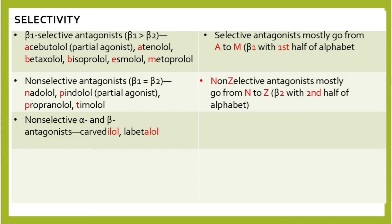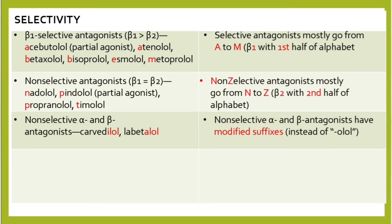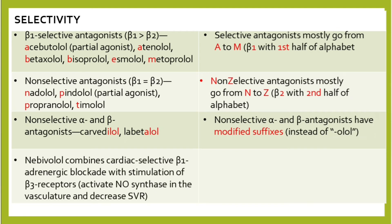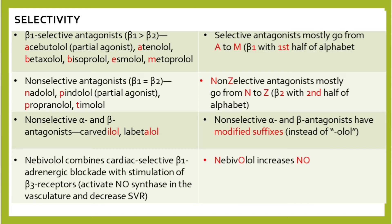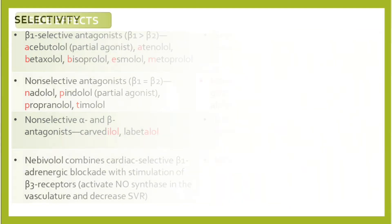Non-selective alpha and beta antagonists — which block both alpha and beta receptors — include carvedilol and labetalol. These have a modified suffix: instead of '-olol' you see '-ilol' or '-alol'. Nebivolol is special: it combines cardioselective beta-1 adrenergic blockade with stimulation of beta-3 receptors, which activates nitric oxide synthase in the vasculature and decreases systemic vascular resistance.